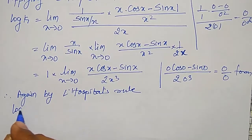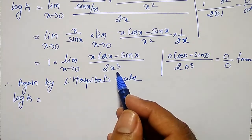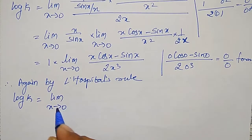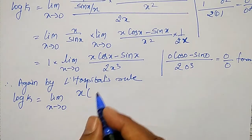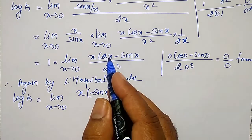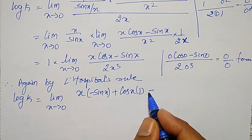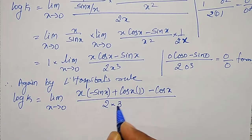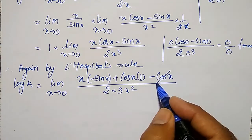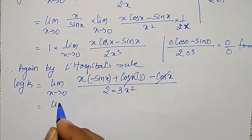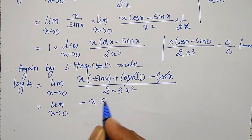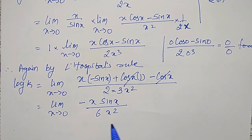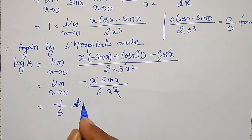Applying L'Hôpital's rule again: differentiating the numerator x·cos x − sin x gives x·(−sin x) + cos x − cos x, which simplifies as the cos x terms cancel, leaving −x·sin x. The derivative of the denominator 2x³ is 6x². So we get limit as x tends to zero of (−x·sin x) / 6x², and one x cancels, giving −(1/6) times limit as x tends to zero of (sin x / x).